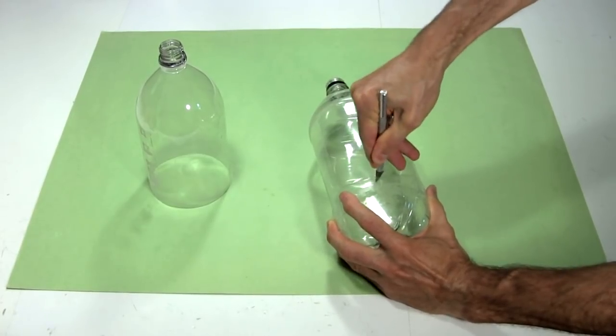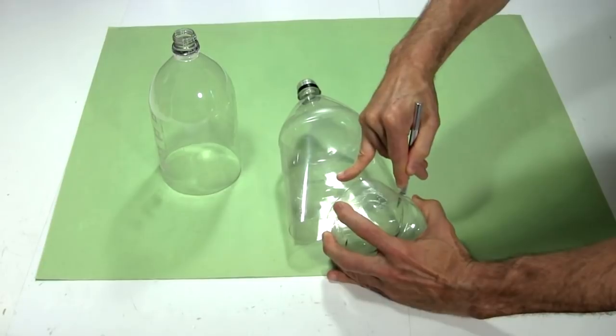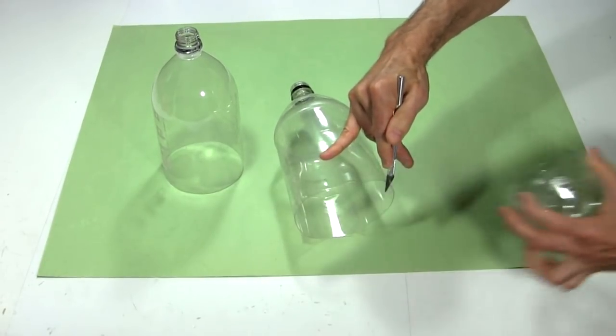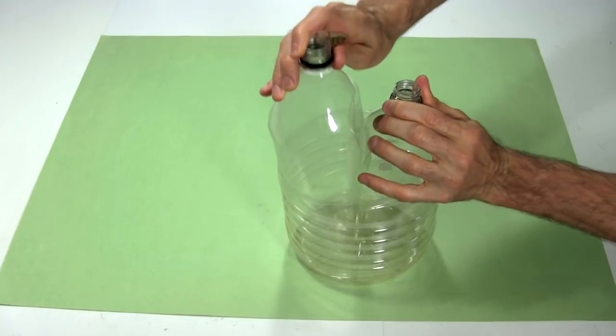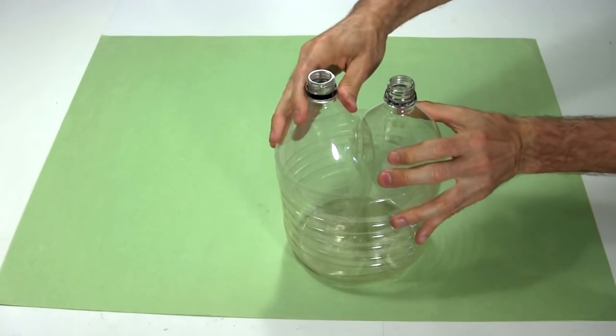Then I found some straight sided soda bottles for trapping and directing the gases. I cut the bottoms away. A quick test, with the help of some pinching, shows that they fit in the container. They're not touching the bottom, since I want fluid to flow from one to the other.